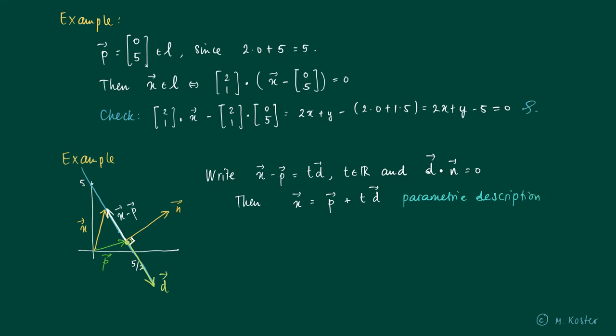And the vector p is a special one, since it points at some point on the line. And in a way it supports the line. We can reach any x on the line by first walking to the line and then going into the direction of d. So d is called the direction vector.